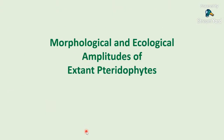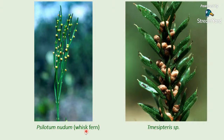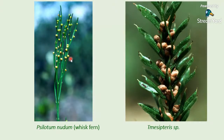I will acquaint you with the morphological and ecological amplitudes of extant pteridophytes. You can see there are primitive pteridophytes called Psilotum nudum and Tmesipteris. Psilotum is referred to as a whisk fern, with a photosynthetic axis that branches dichotomously, bearing trisporangiate synangia on the lateral side subtended by a small leaf-like appendage. In Tmesipteris, there are bisporangiate synangia subtended by a large leaf-like appendage. These are primitive — they do not have roots, but have rhizoids.